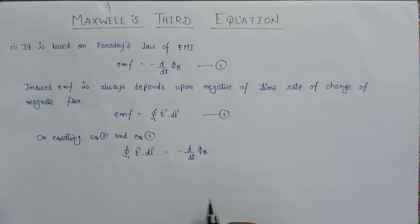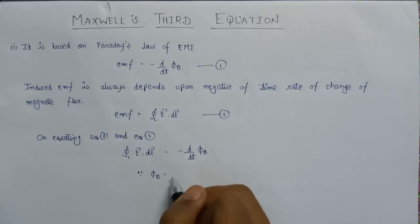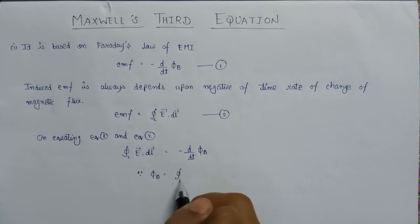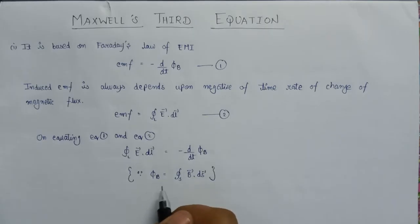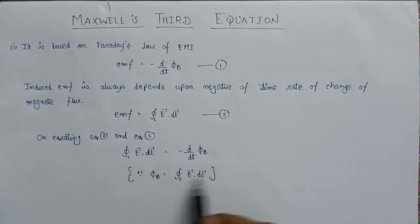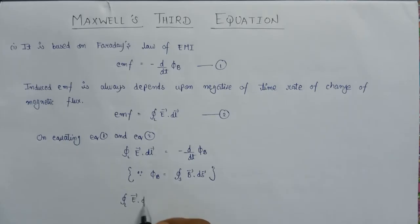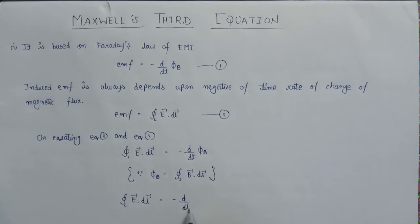Since we know that the magnetic flux phi_B is equal to the integration over a closed surface of B dot dS, this is the basic formula for magnetic flux. Replacing phi_B with this expression, we get the line integral of E dot dl equal to the negative of the time rate of change of the surface integral of B dot dS.